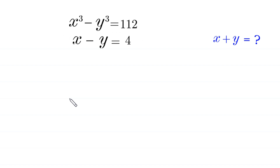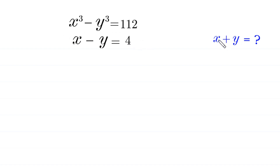Hello everyone, you are welcome to how to solve this very nice system of equations. x cubed minus y cubed is equal to 112, and x minus y is equal to 4. Our job is to find all possible values of x plus y.